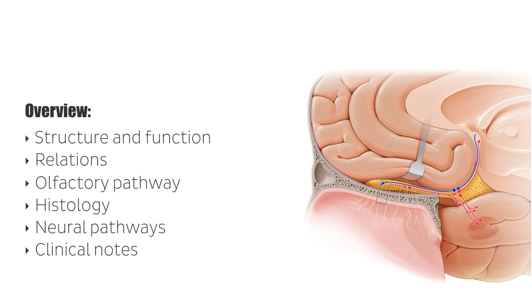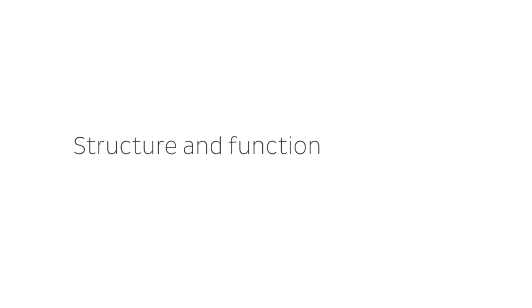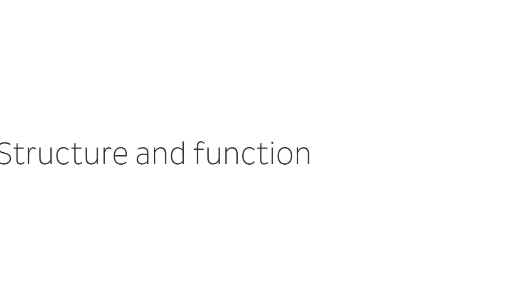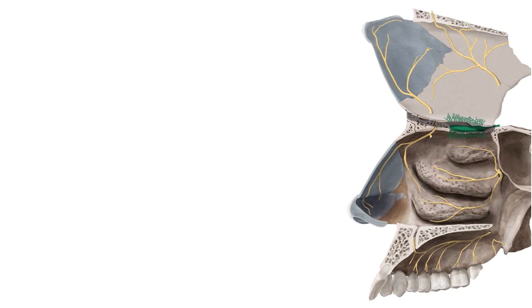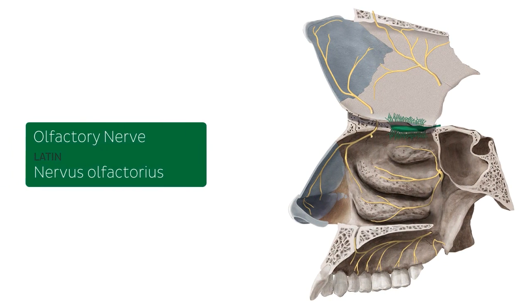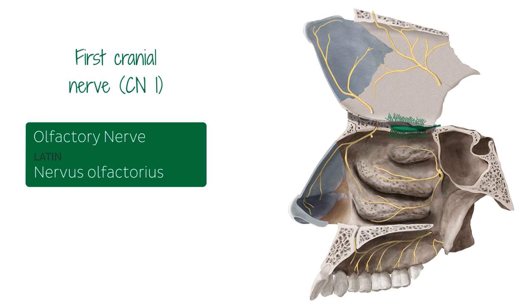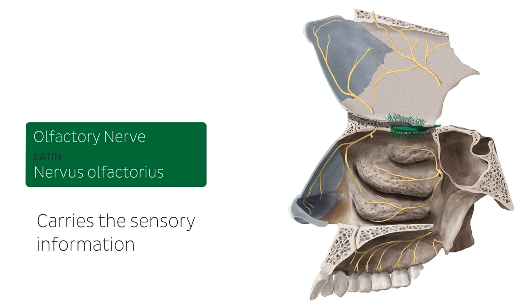Now let's start with the first item on the list, which is the structure and function of this nerve. So what exactly is the olfactory nerve? The olfactory nerve is the first of 12 cranial nerves, and can also be acronymed to CN1. It's a sensory nerve that transmits sensory information to the brain, allowing us to have a sense of smell.